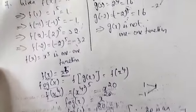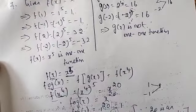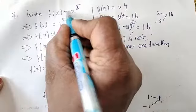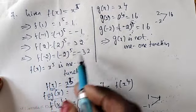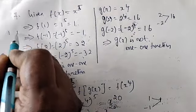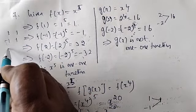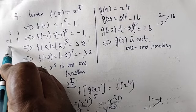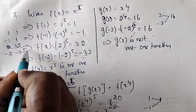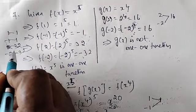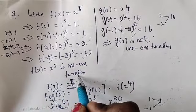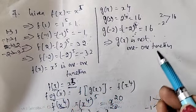First, we find out f and g are 1-to-1. So 1 and -1 map to different images in f. You can see: 1 maps to 1, -1 maps to -1, 2 maps to 32, -2 maps to -32. So they are all different images — f is a 1-to-1 function. For g, the same image appears, so g is not 1-to-1.